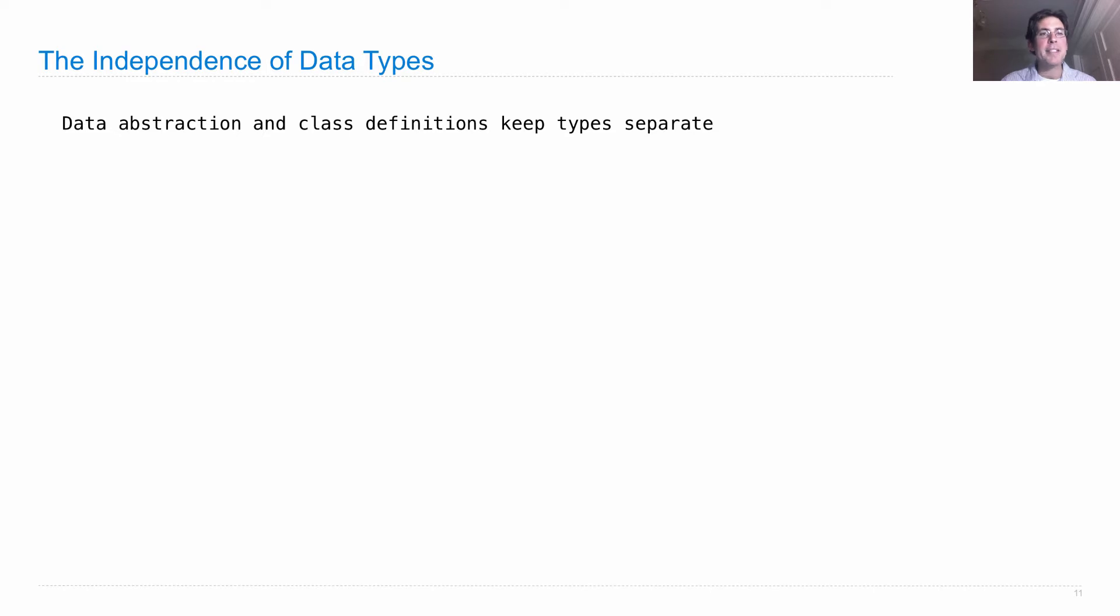So, data abstraction and class definitions keep the rational class and the complex classes different from each other. But these are things that can interact. Some operations need to cross those type boundaries.